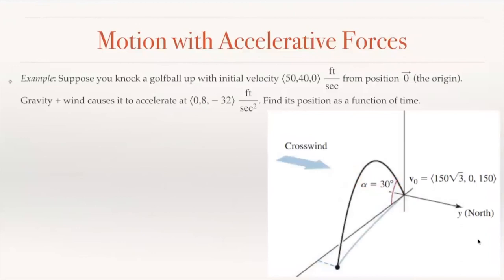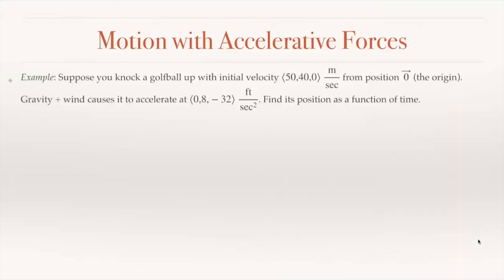Let's do a last example. Suppose you hit a golf ball with initial velocity (50, 40, 0) feet per second from the origin (0, 0, 0). Gravity and wind cause acceleration of (0, 8, −32) feet per second squared — the −32 in the z-coordinate is downward gravity, and the 8 in the y-coordinate is a horizontal wind acceleration. To find position as a function of time, we first find velocity by integrating acceleration, since position is the integral of velocity and we need velocity first.